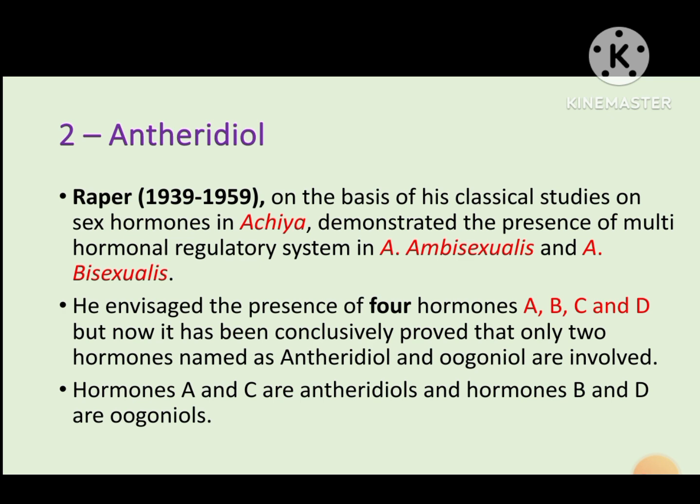Next is antheridiol. Antheridiol was first discovered by Raper and is also called the oogoniol hormone. It was extracted from two species of fungi: Achlya bisexualis. From these, four types of antheridiol or oogoniol were extracted — types A, B, C, and D. According to current information, A and C are classified as antheridiol, while B and D act as oogoniol.